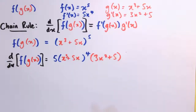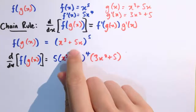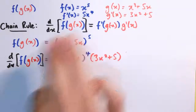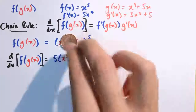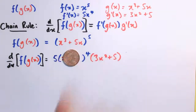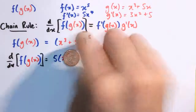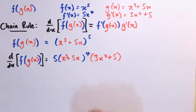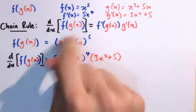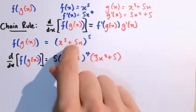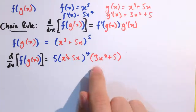What we've done is looked at this composition and almost started by ignoring what's inside. We think of the outside function as just something to the 5 — it could be a penny to the 5 — and if we differentiated that we'd get 5 penny to the 4. But then we remember it wasn't just x, it was this whole function, so we get 5 times that function to the power of 4. The chain rule says when it's something more complicated than x, we also have to multiply by the derivative of the inside function to make the result correct.